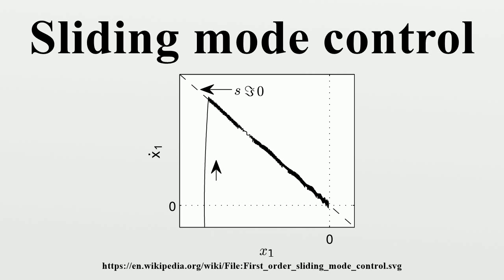If the control can ensure that the state quickly returns to zero, then the output will track the desired signal. In sliding mode control, the designer knows that the system behaves desirably provided that it is constrained to a subspace of its configuration space. Sliding mode control forces the system trajectories into this subspace and then holds them there so that they slide along it. This reduced-order subspace is referred to as a sliding surface. When closed-loop feedback forces trajectories to slide along it, it is referred to as a sliding mode. The sliding mode is enforced by creasing the vector field with high-gain feedback, like a marble rolling along a crack.